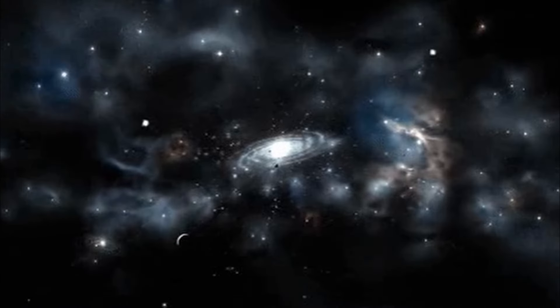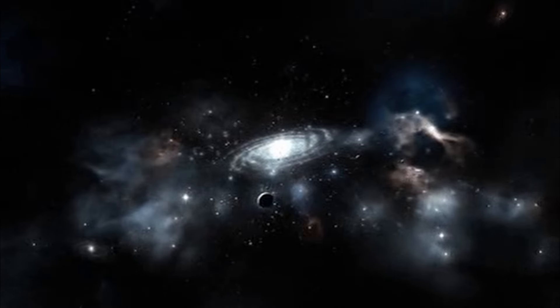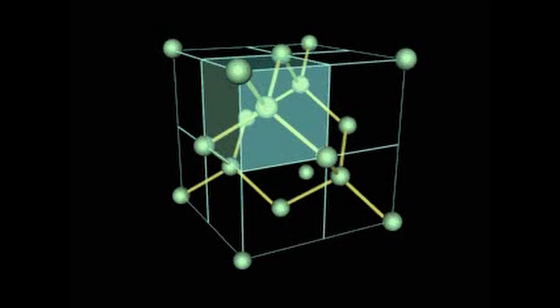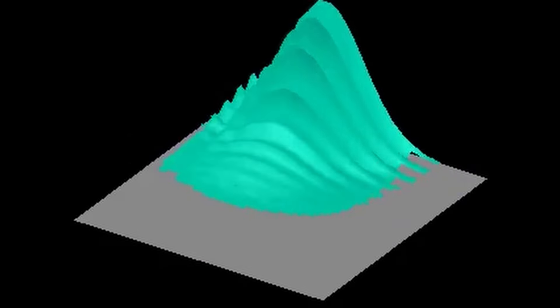The concept of mixed states is intimately related to density matrices in quantum mechanics. In quantum mechanics, a pure state can be described by a single wave function representing a system in a definite, fully known quantum state. However, in many practical situations we lack complete information about the system, or the system is part of a larger entangled system. In such cases we use mixed states — a statistical ensemble of several different possible pure states, each occurring with a certain probability, like a collection of quantum systems each prepared in a different pure state where we only know the probability distribution.